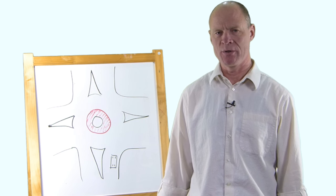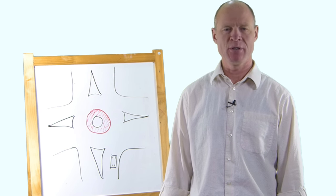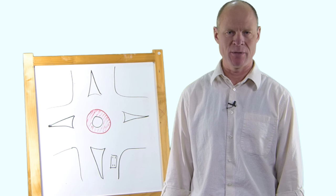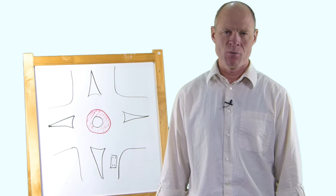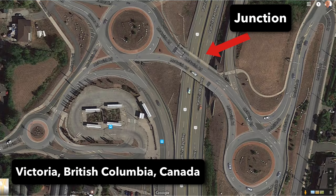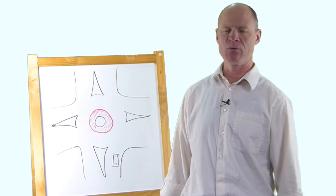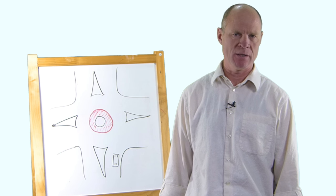Most roundabouts in North America are going to be single-lane — very few will be multi-lane, because there's a reluctance to install roundabouts despite their benefits. A perfect example of roundabouts being mishandled in North America is the Victoria International Airport, where five roads meet at a junction. Instead of one multi-lane roundabout, engineers put in three roundabouts and an overpass. Despite that reluctance, roundabouts are making inroads into residential areas, and many of them are single-lane.